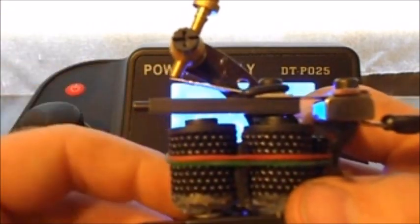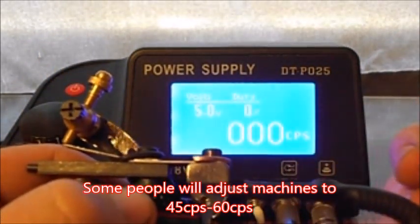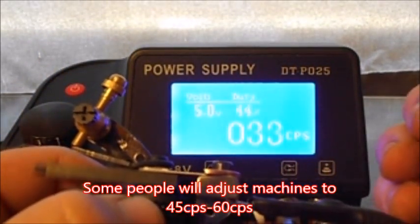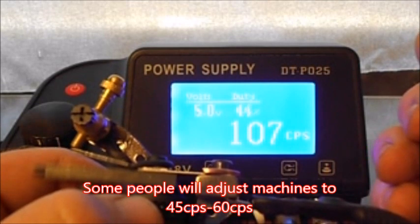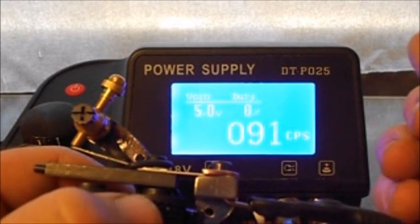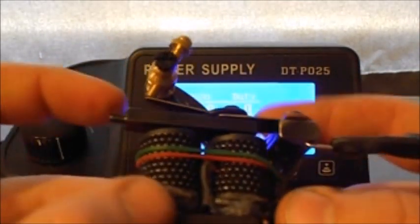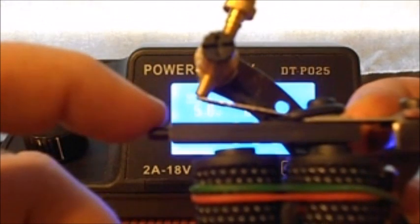This machine is running about 45% duty cycle, which means that it is down more than it is up.